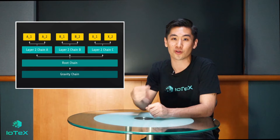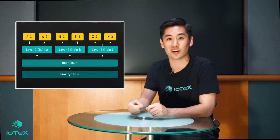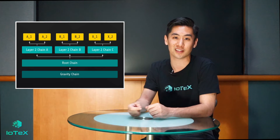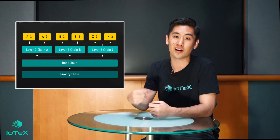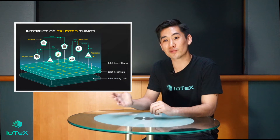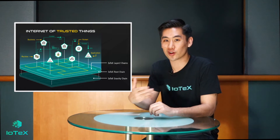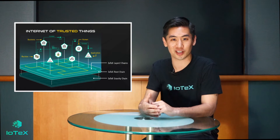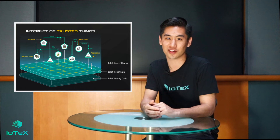In the future, we want anyone to be able to create a brand new layer two chain just as easily as they would create a new instance on cloud. So that's the intermediate explanation of Mainnet Alpha. In short, it provides all the infrastructure developers need to start creating new dApps and layer two chains in the IoTeX network.